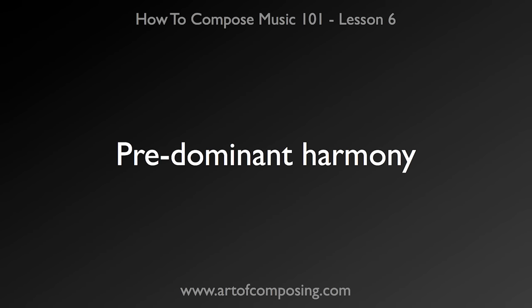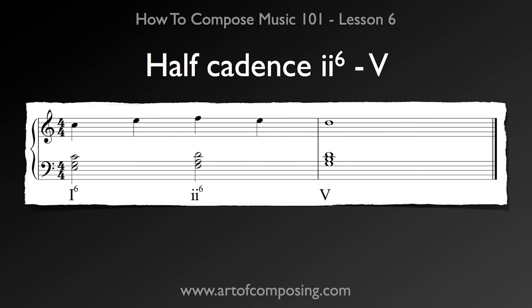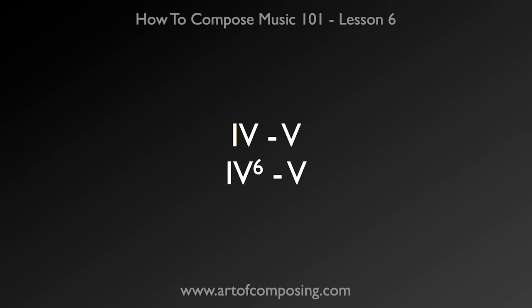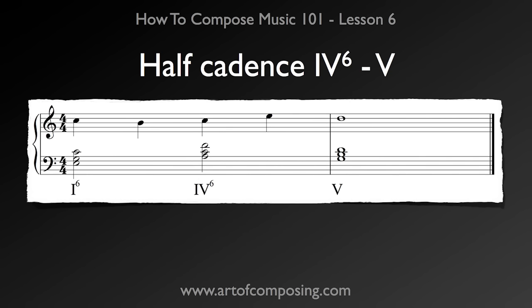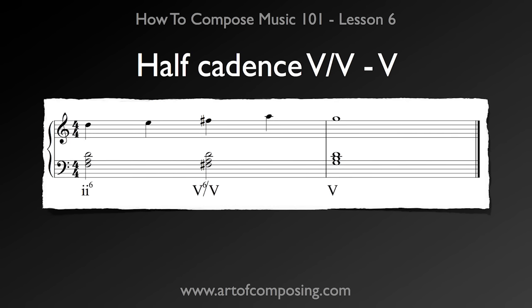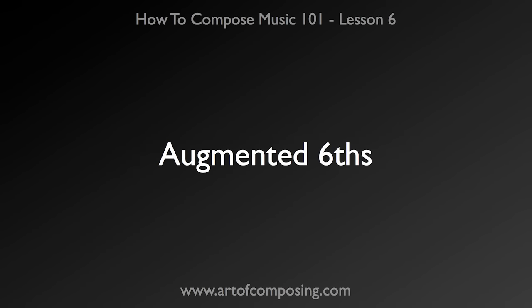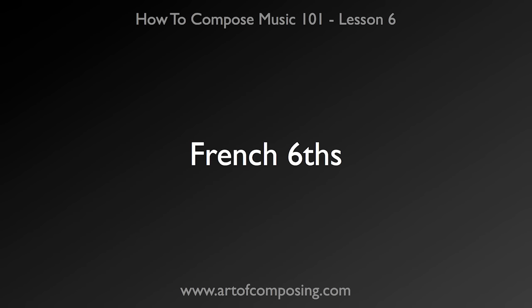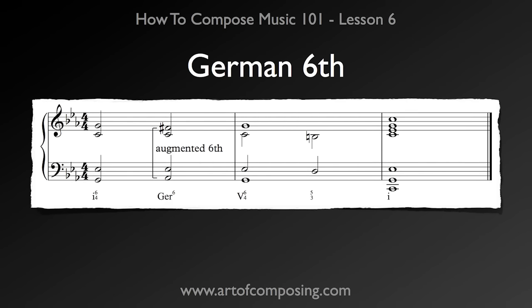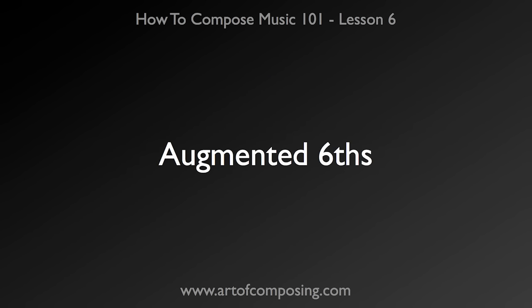The predominant harmony comes in many different types, and this goes for authentic progressions as well. You can have the standard 2-6 to 5, 4-5 or 4-6 to 5. You can also have applied dominants, modal mixture, and then there's also a class of augmented 6th chords called the Italian 6th, German 6th, and French 6th. I won't get into the augmented 6th chords today, but I am going to talk about modal mixture in just a little bit.